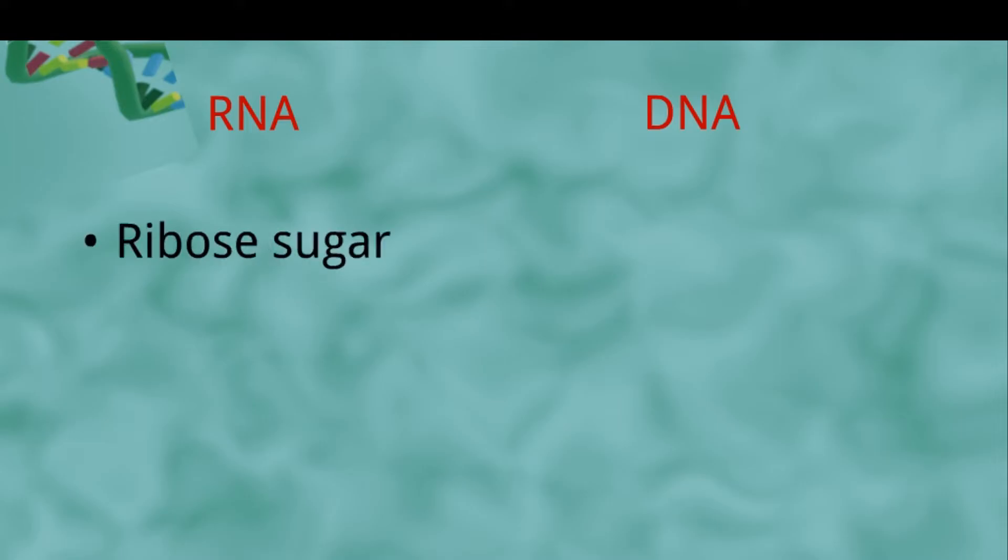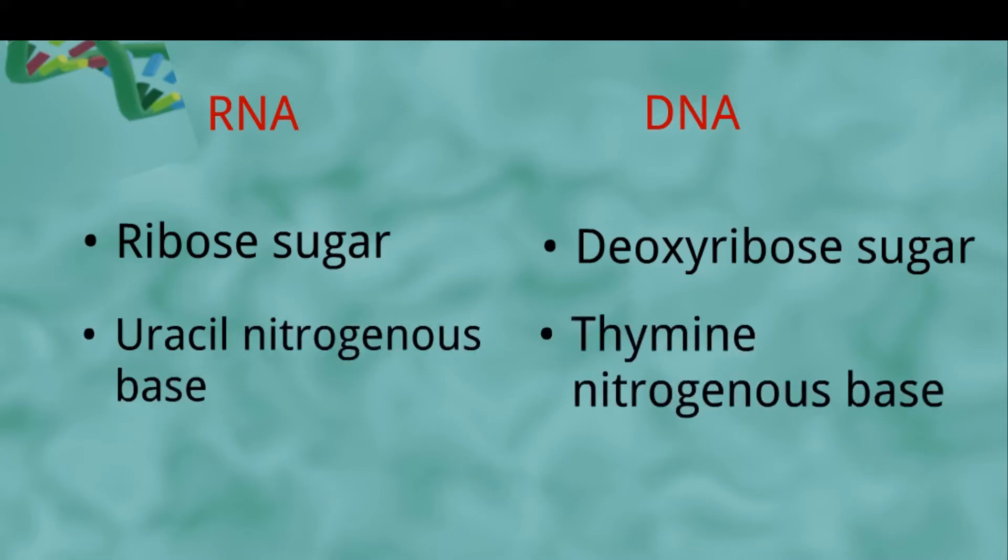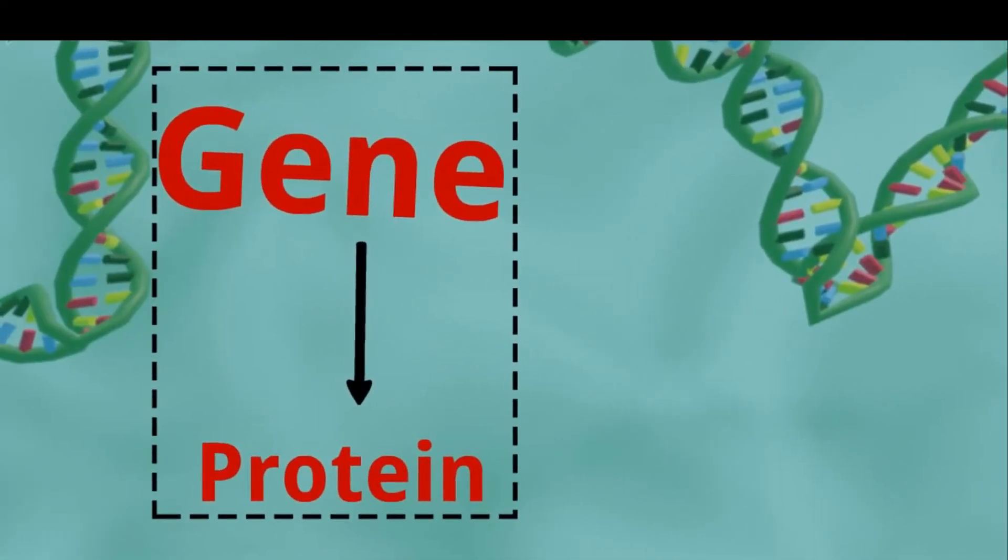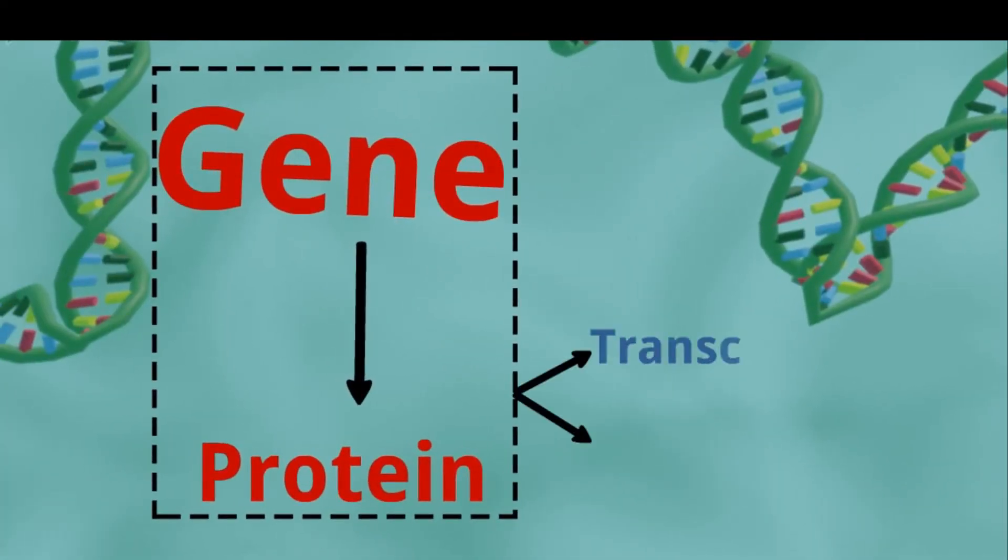RNA substitutes the nitrogenous base uracil for thymine. RNA always consists of a single-stranded molecule, whereas DNA is a double-stranded molecule. Now let's learn about the procedure from gene to protein, that is transcription and translation, in detail.